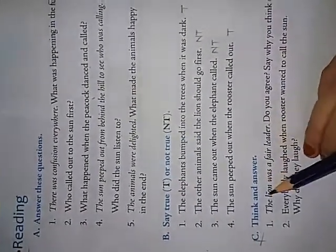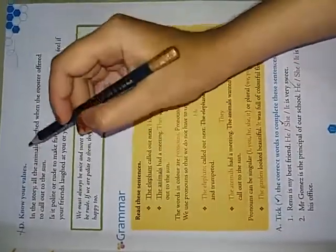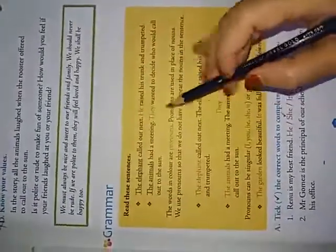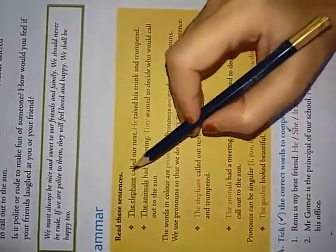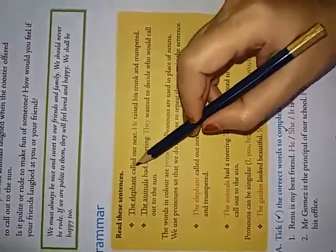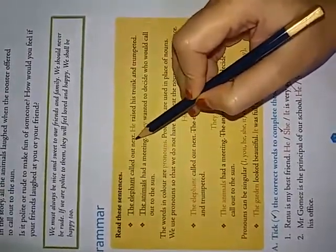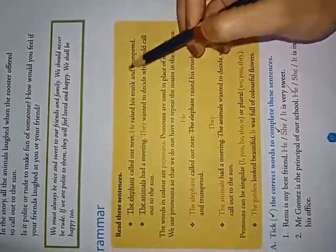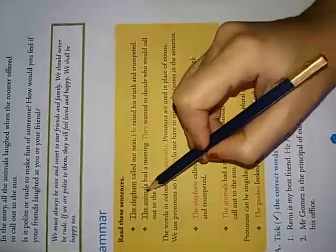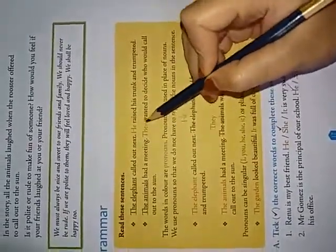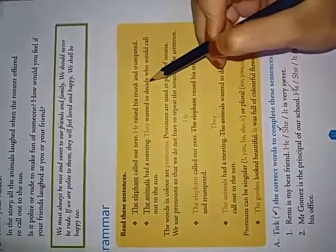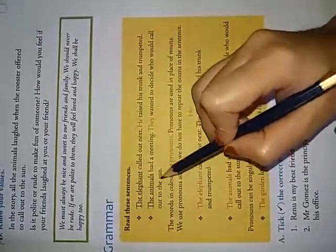Now, this C, think and answer and know your values is deleted. Okay, children? So, no need to learn that bits. Now, let us come for the grammar bit. Read these sentences. The elephant called out next. He raised his trunk and trumped it. The animals had a meeting. They wanted to decide who would call out to the sun.